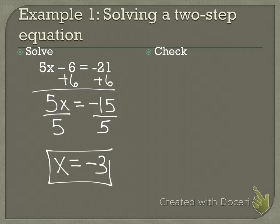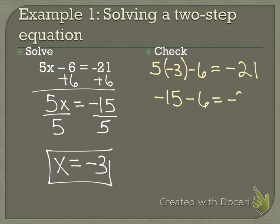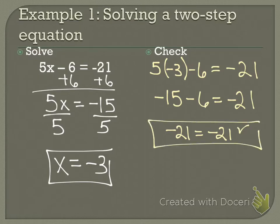But I'm not done. On your homework assignment, it's going to ask you to check your solution. Plug it back in for the variable in the original problem. So now I come over here to check: 5 times negative 3 minus 6 equals negative 21. What's 5 times negative 3? Negative 15 minus 6 equals negative 21. Same sign, so I add and keep. Negative 21 equals negative 21, and it checks out.